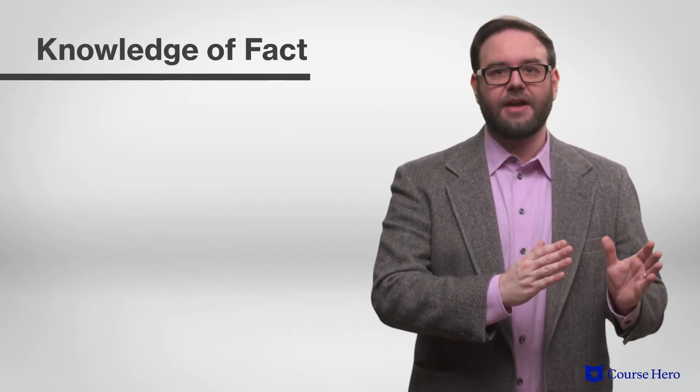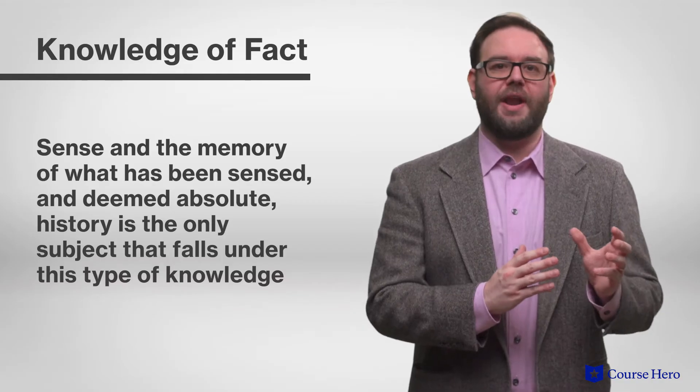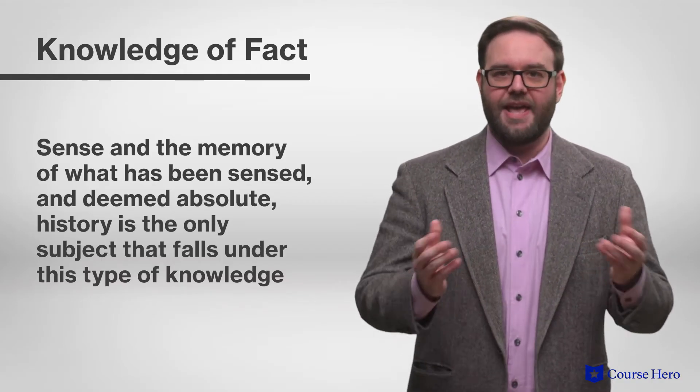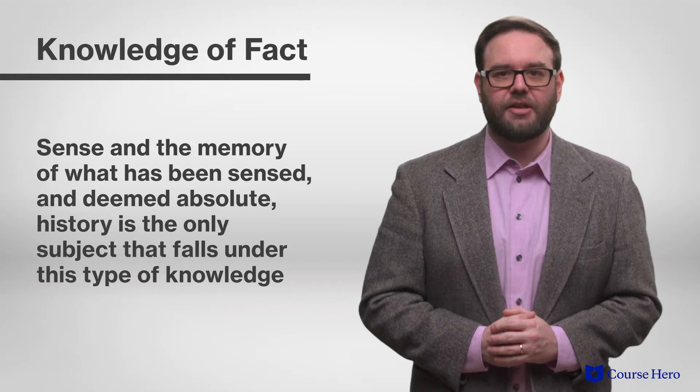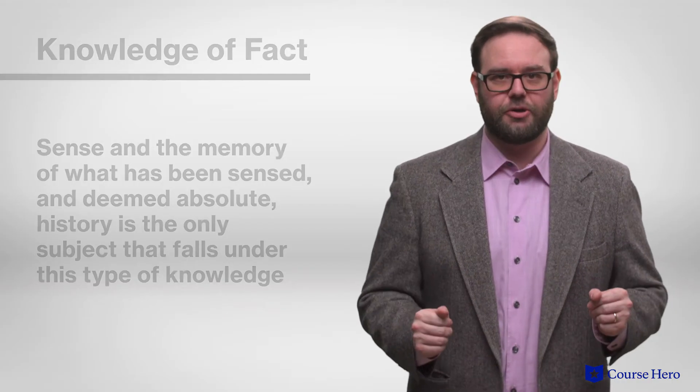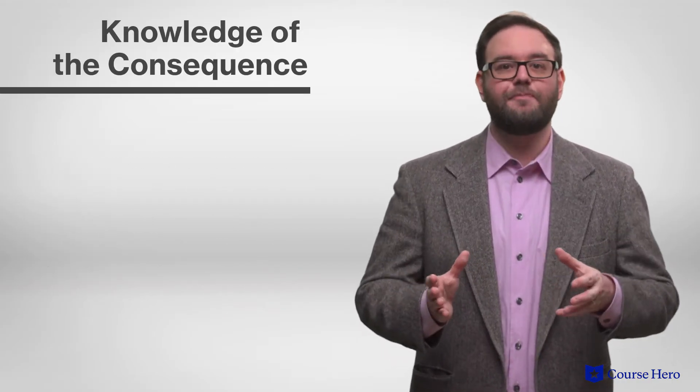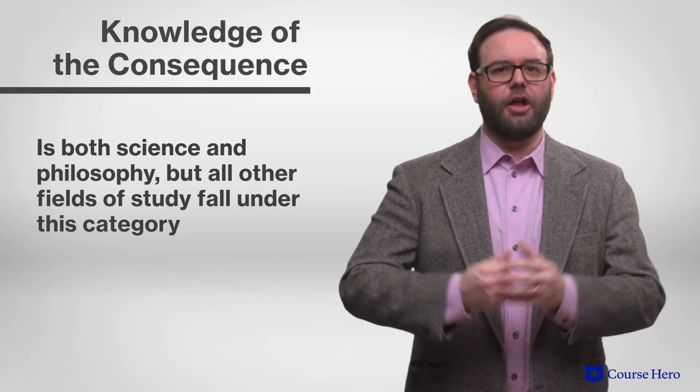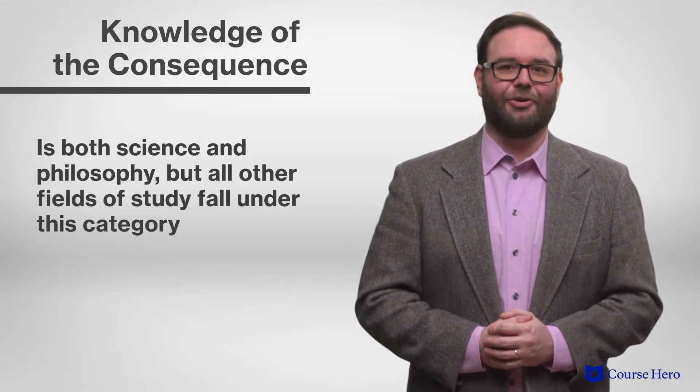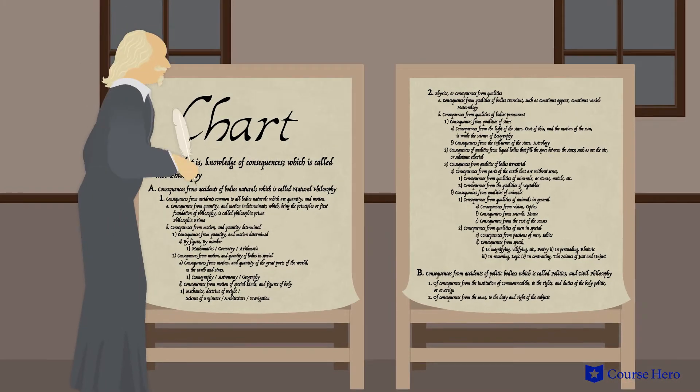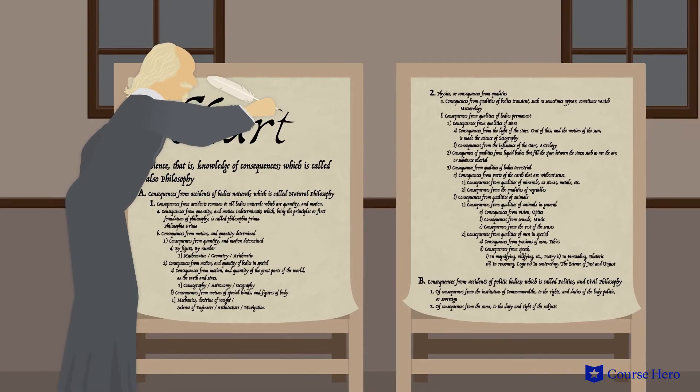Hobbes distinguishes two kinds of knowledge. Knowledge of fact is sense and the memory of what has been sensed, and he deems it absolute, with history as the only subject that falls under this type. Knowledge of the consequence is both science and philosophy, and all other fields of study fall under this category. Hobbes provides a chart itemizing all the various subject areas to prove his point.